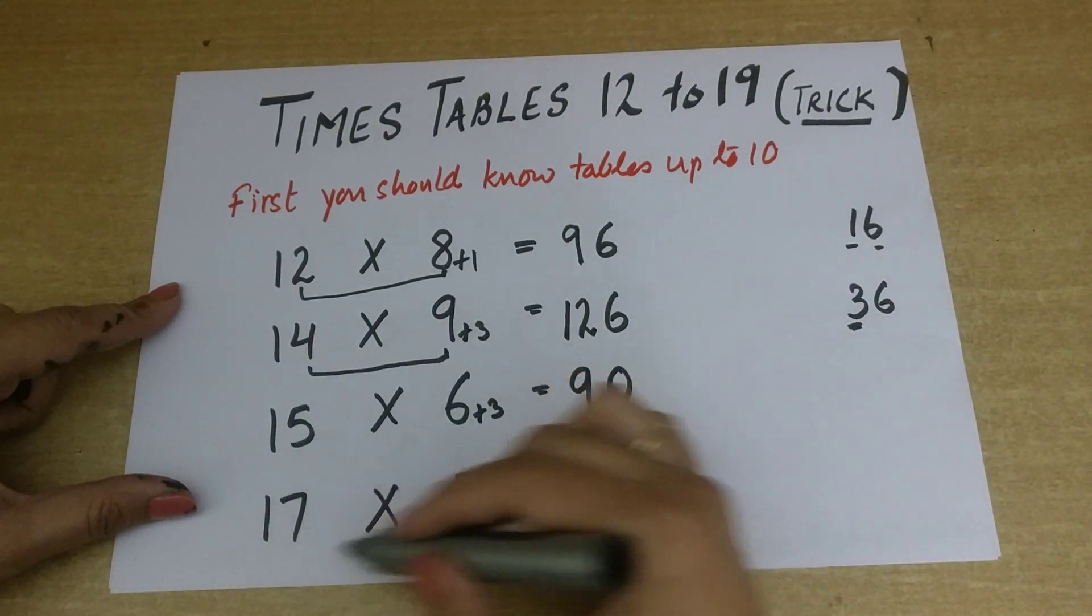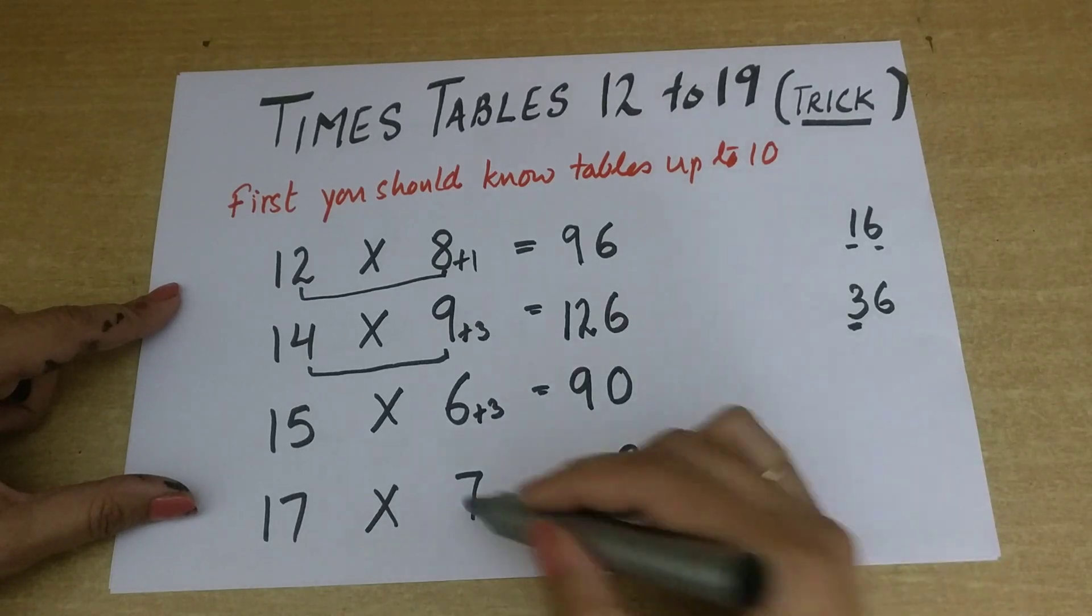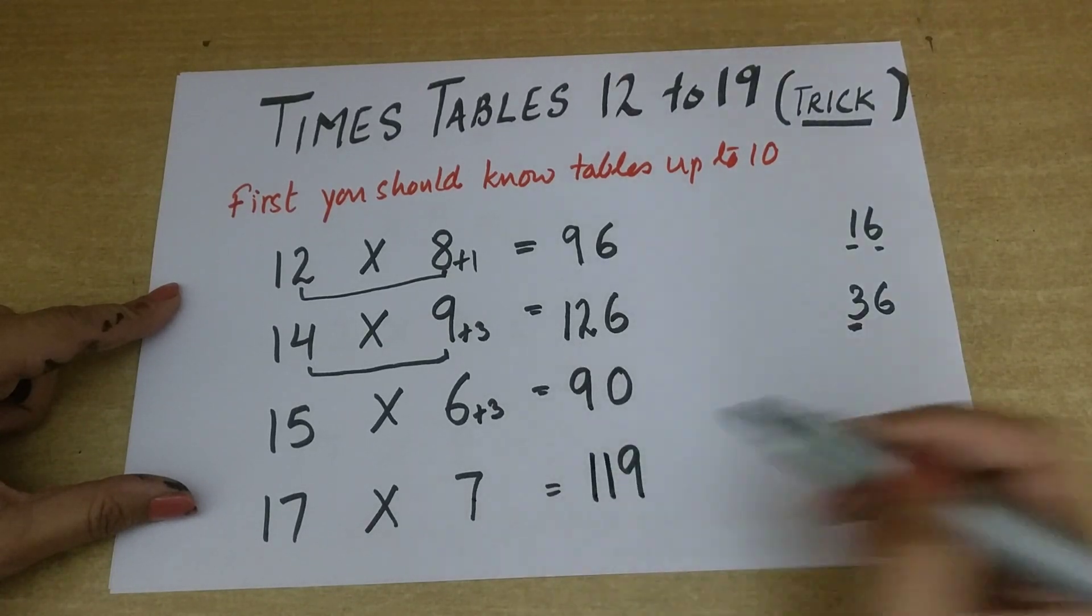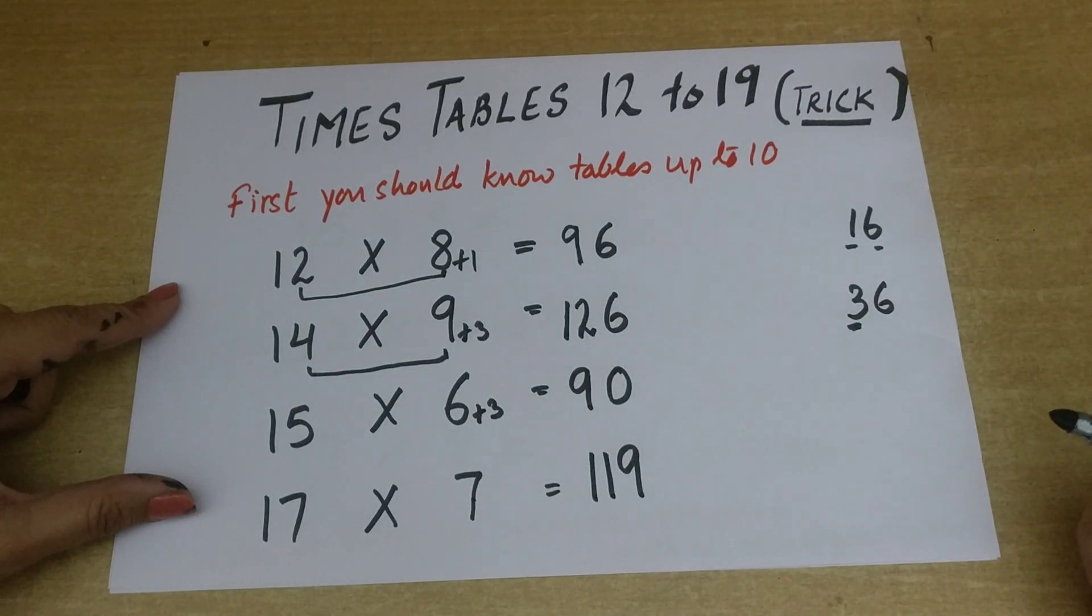That's the last one. 7 times 7 are 49, 7 plus 4 is 11. So 17 sevens are 119. See how easy it is.